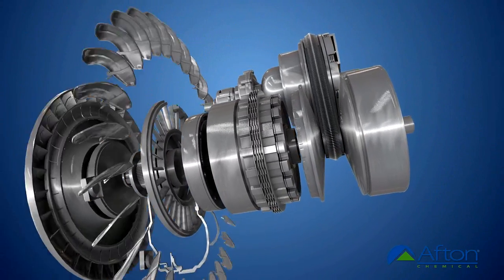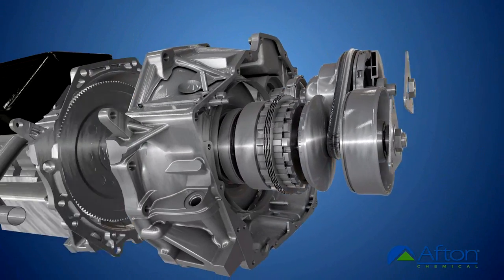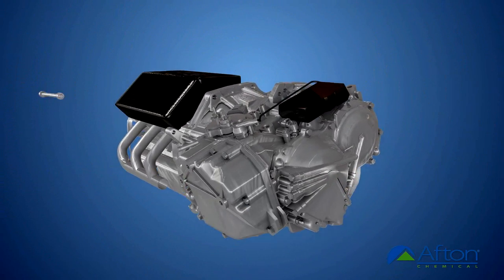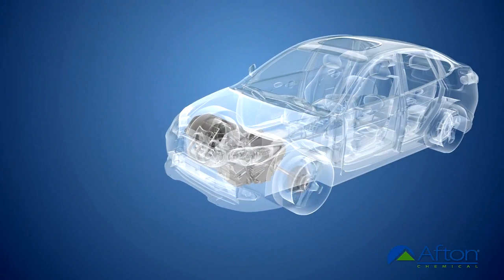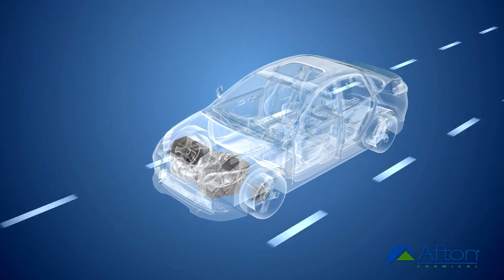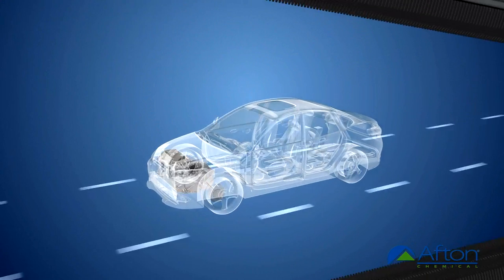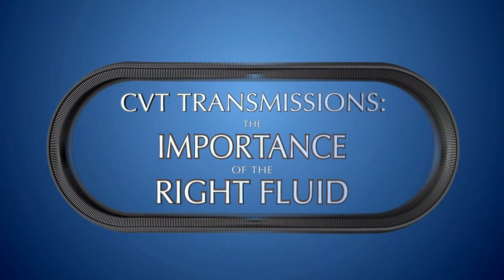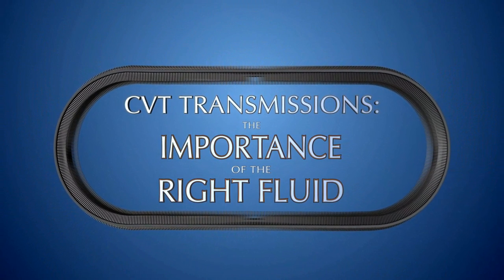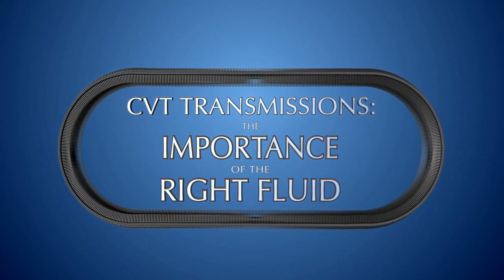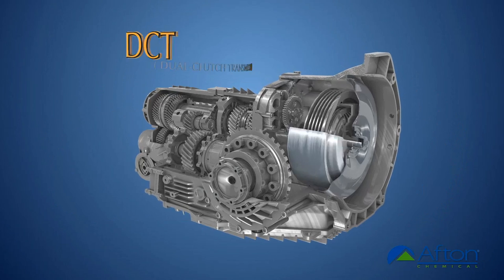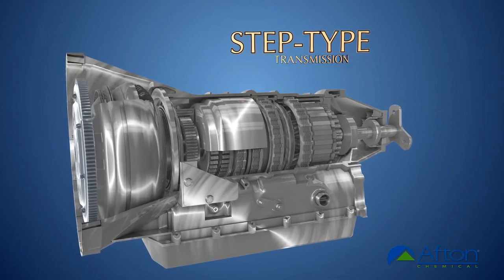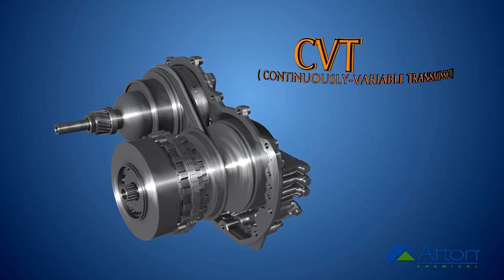The automatic transmission is perhaps the most complicated component in an automobile. It combines electrical and mechanical systems, hydraulics, and computer processors to smoothly shift through the gear ratios and transfer engine power to the drive wheels. There are three basic types of automatic transmissions: the dual clutch transmission or DCT, the step type transmission, and the continuously variable transmission.